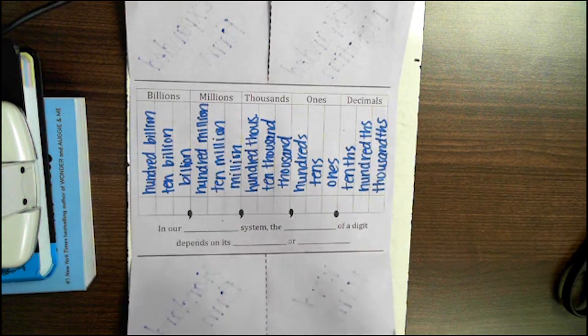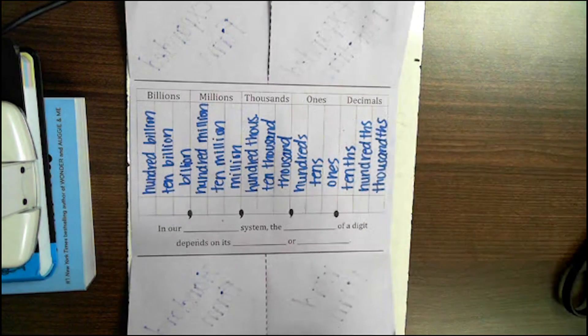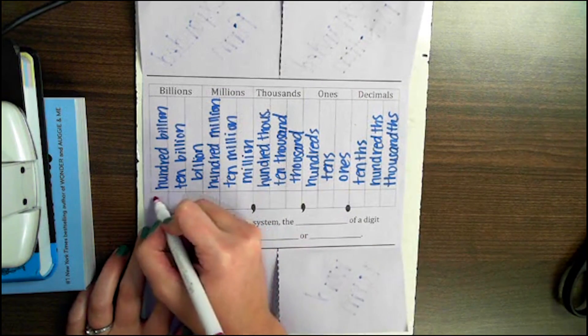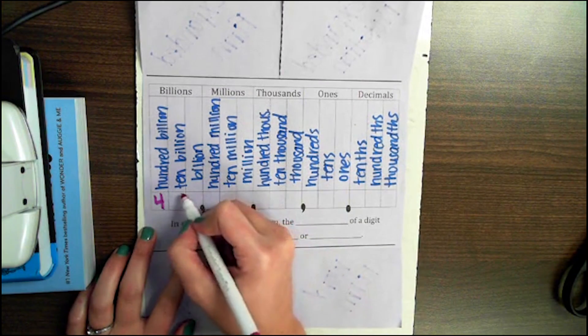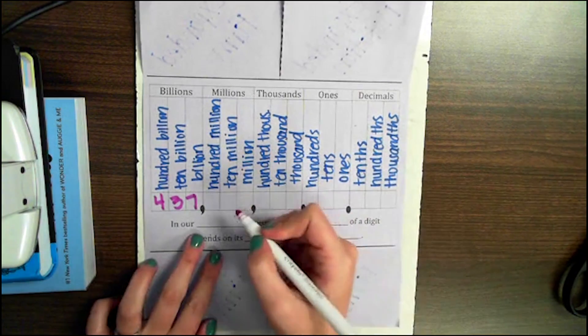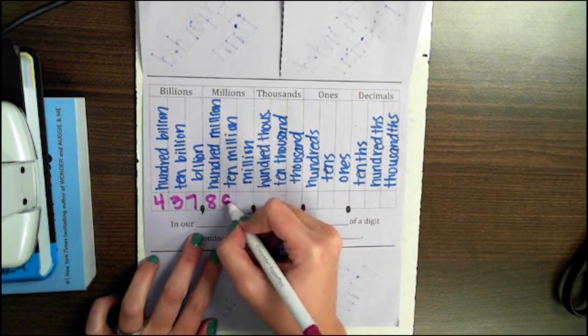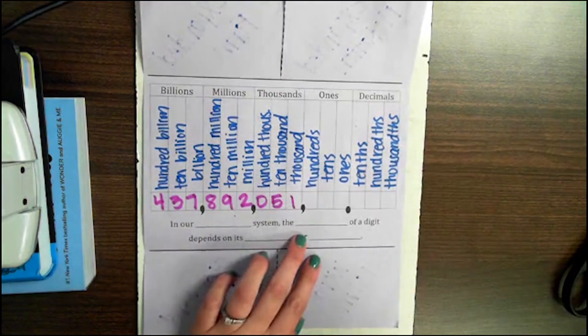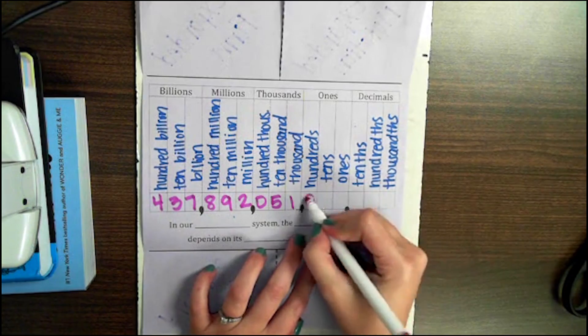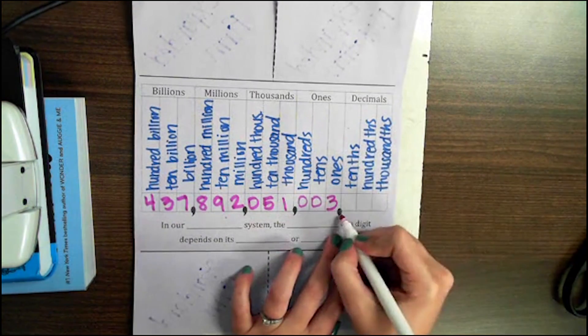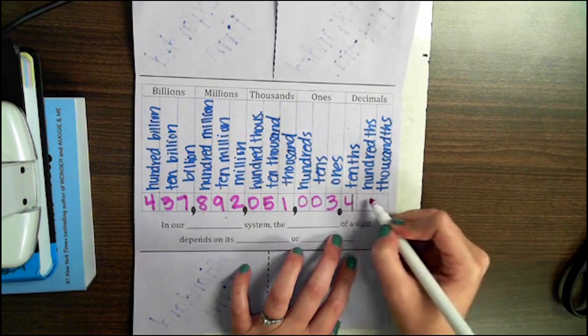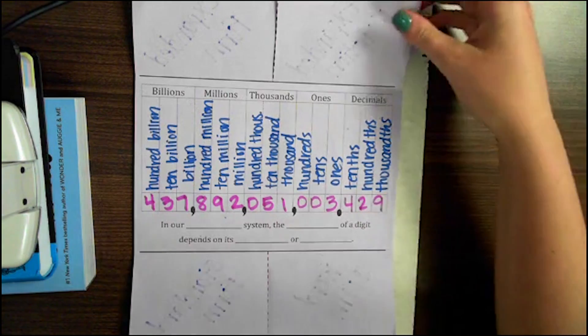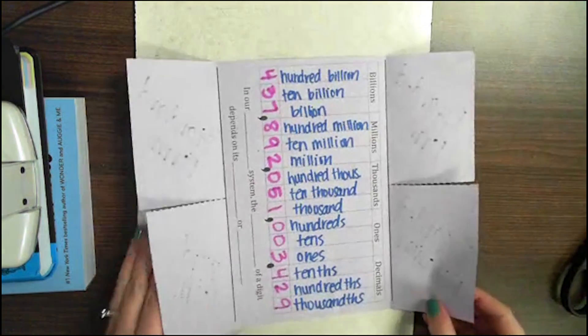We are going to give ourselves a number here to work with. We are going to work with the number 437,892,051,003 and 429 thousandths. So let's fill in each part of our foldable.